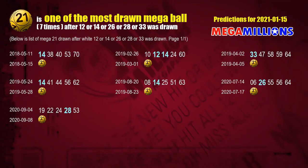After getting the following ones, we can use following number statistics to find out following Mega Ball numbers too. Let's see which Mega Ball comes after these winning numbers of this draw. The first Mega Ball most drawn after 12, 14, 26, 28, or 33 was drawn is Mega Ball 21.